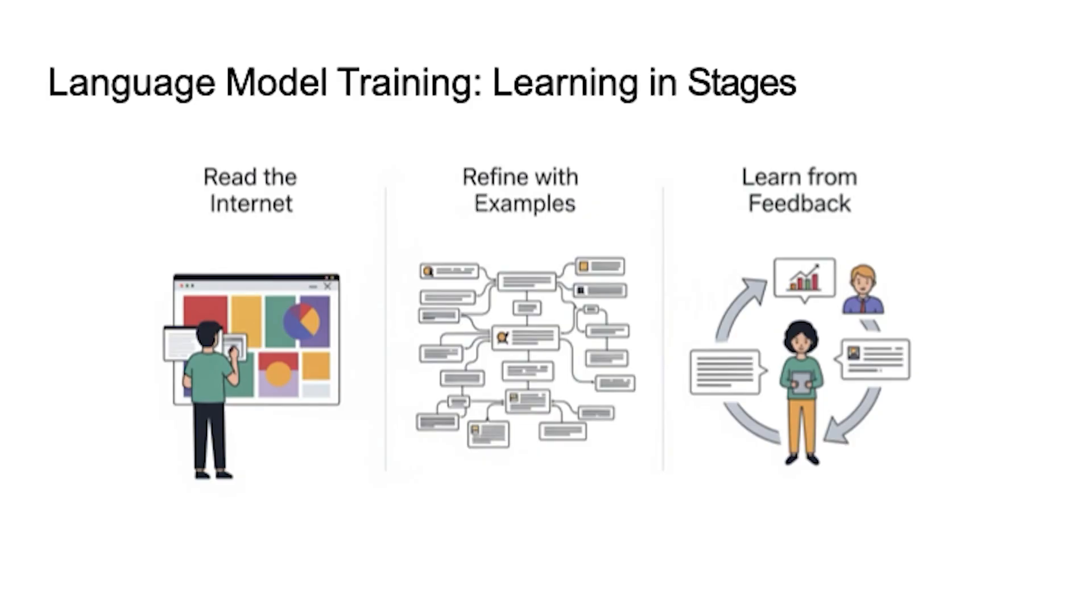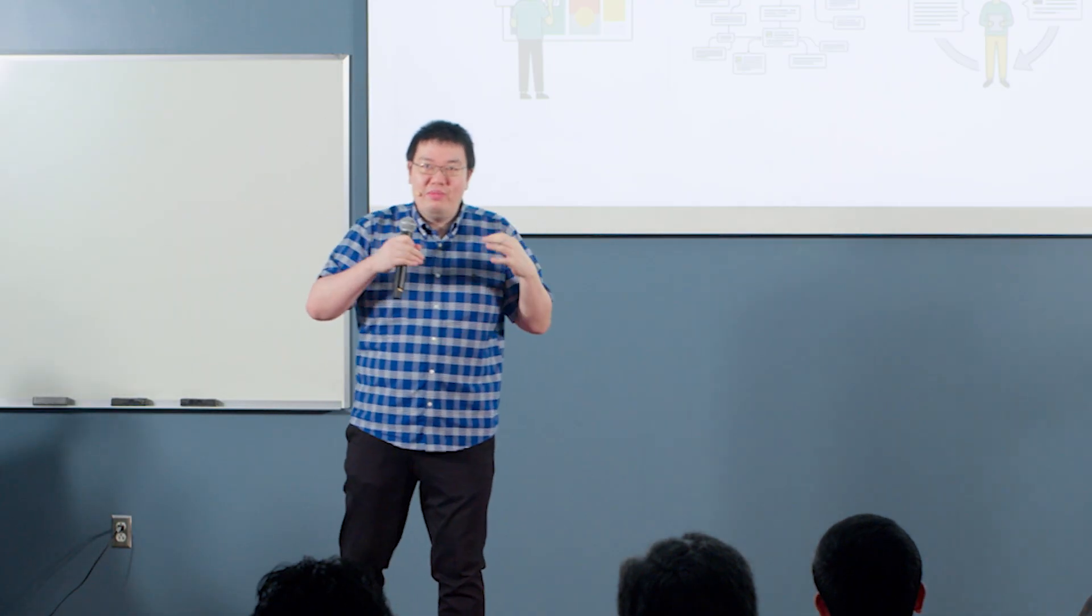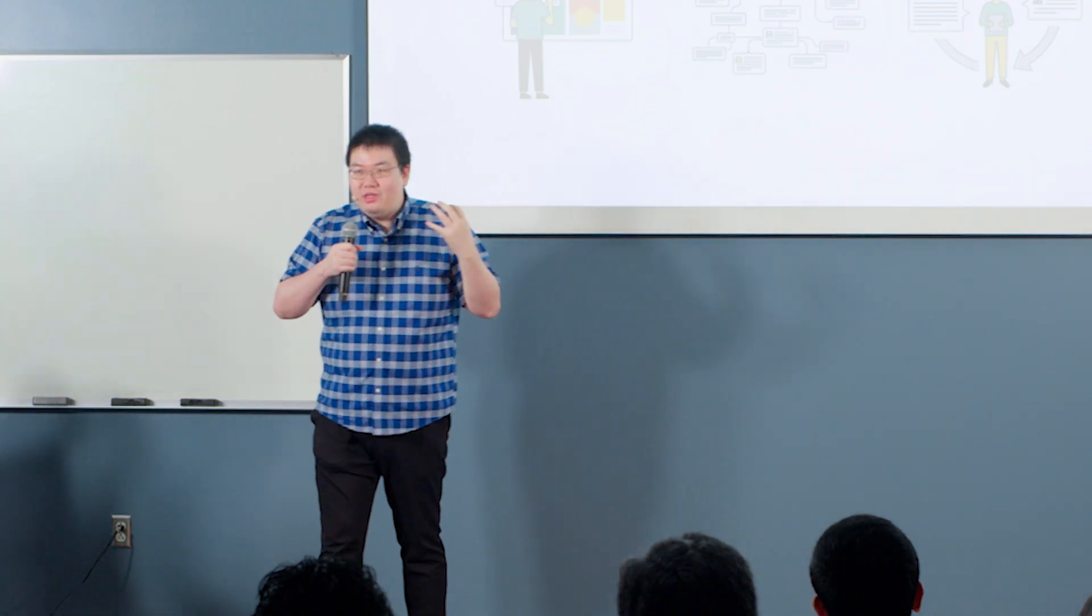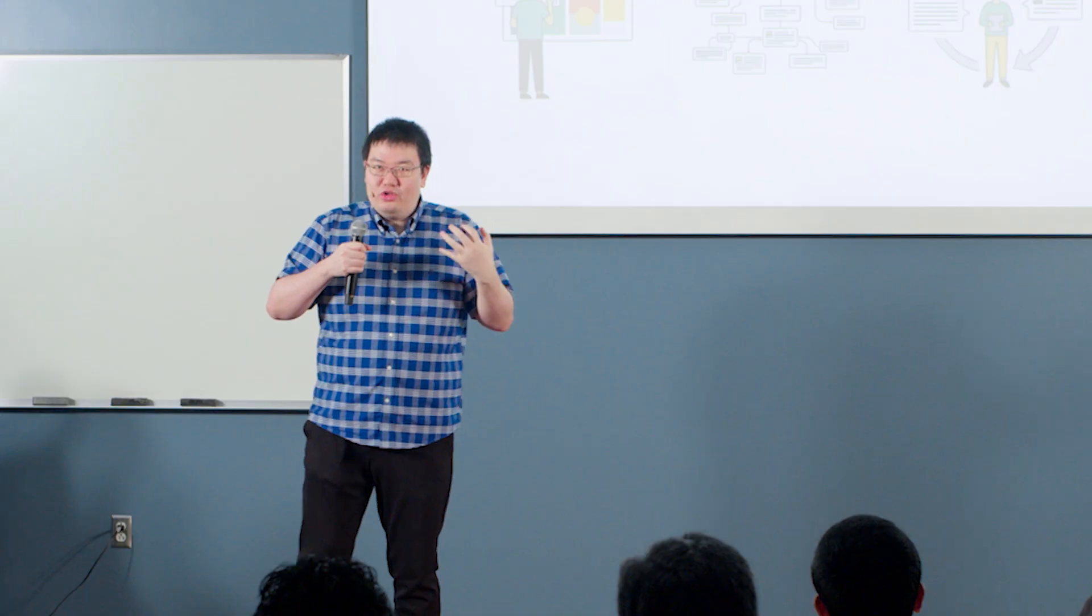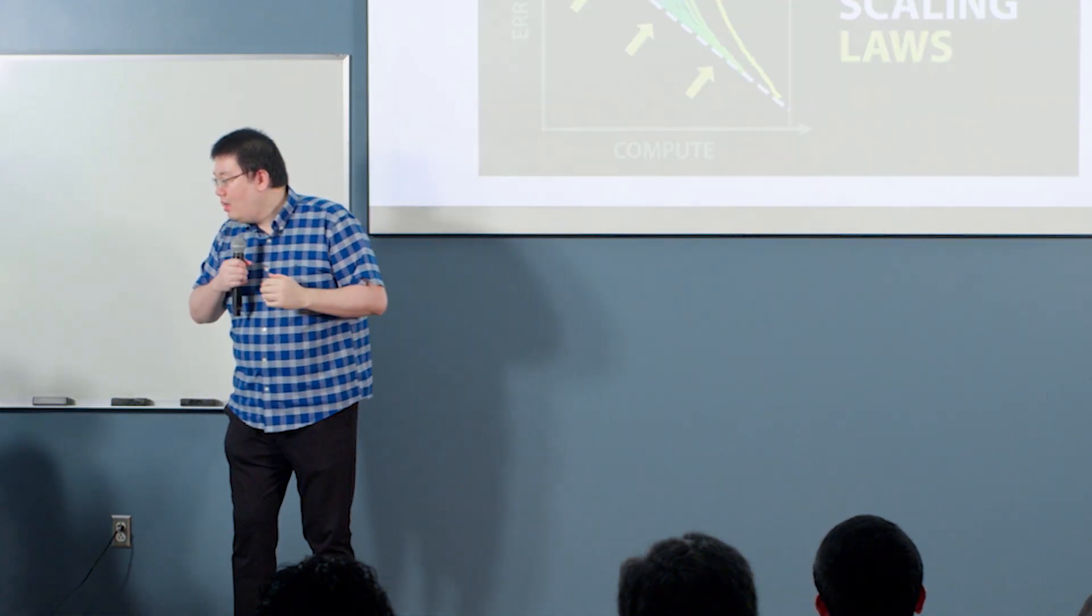And the third step is so-called learning from human feedback. So I have a teacher, professional, or something like that. They can tell me whether my answer is right or wrong. So through these three steps, they can gradually accumulate knowledge to improve the performance.